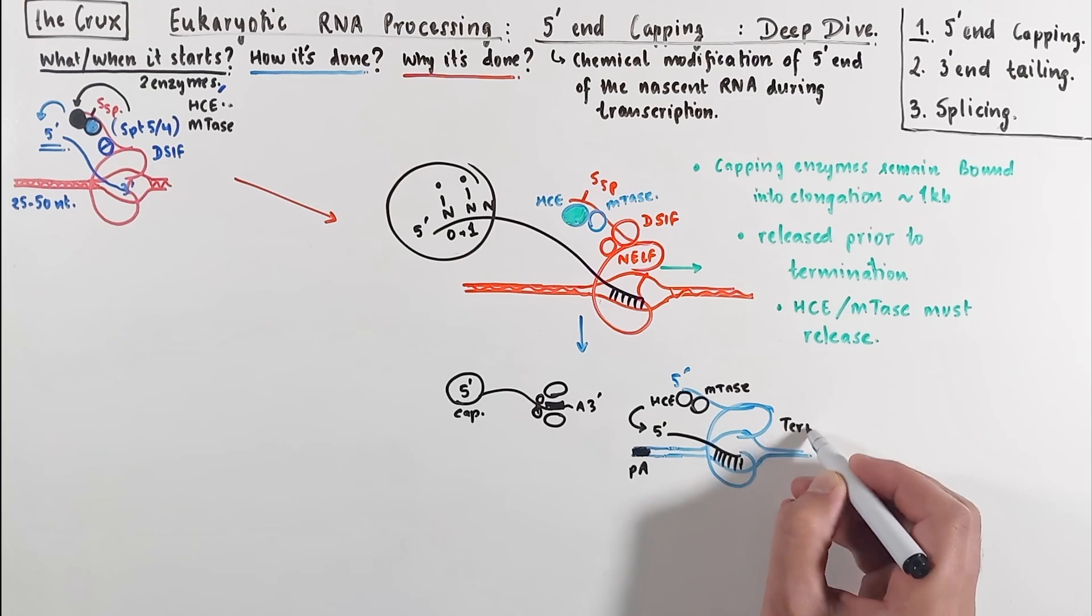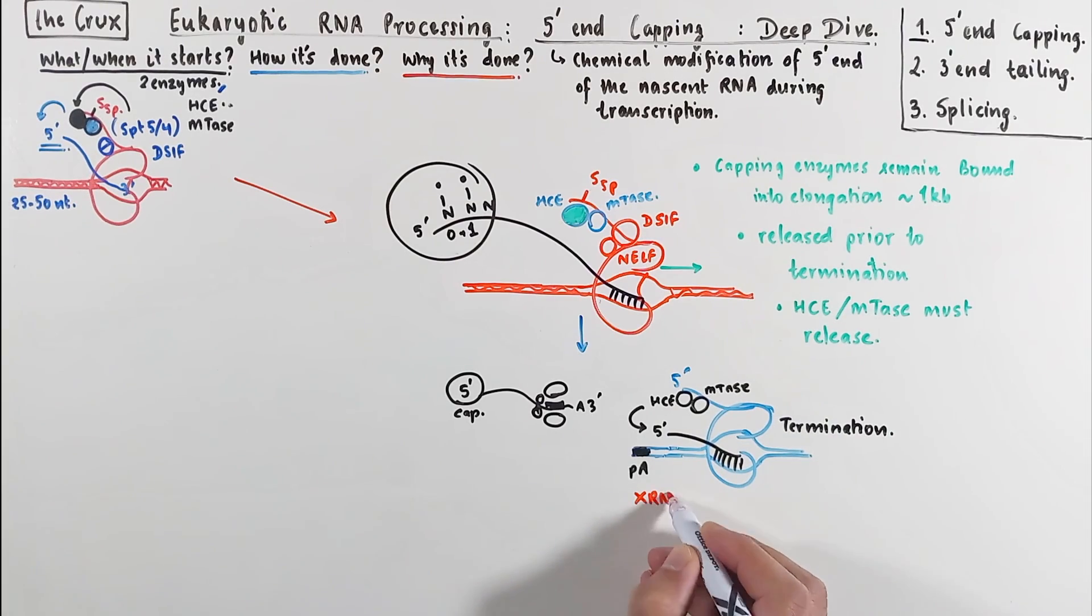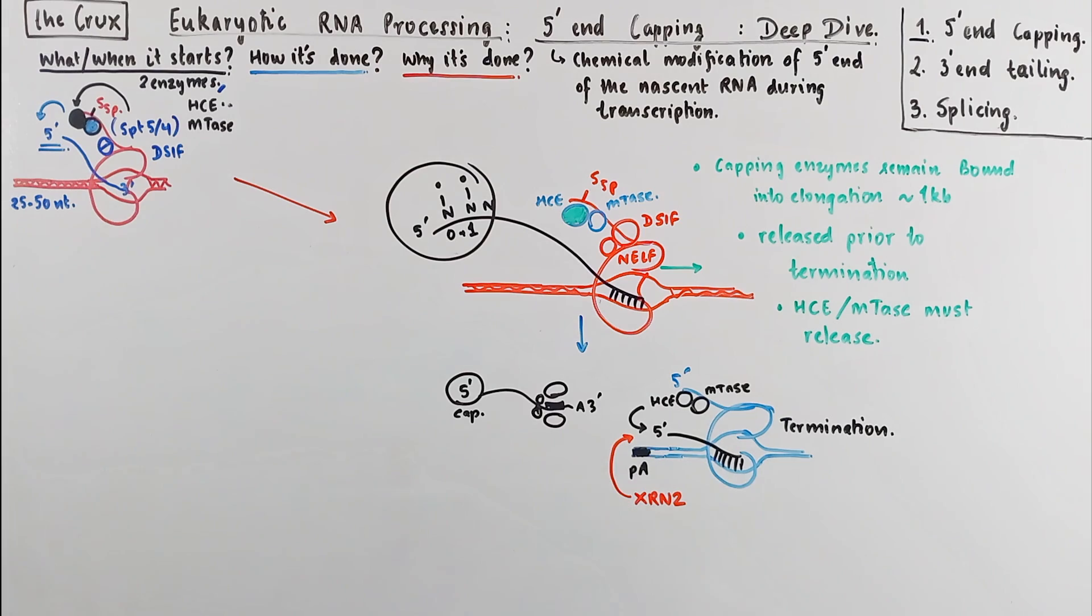After capping, we would have stabilized this cleaved RNA. And the XRN2 cannot perform this exonucleus digestion step, because this cap blocks the exoribonucleus activity. As a consequence now, the RNA polymerase will also fail to terminate. So capping is an important time-sensitive step for the stability of the RNA.